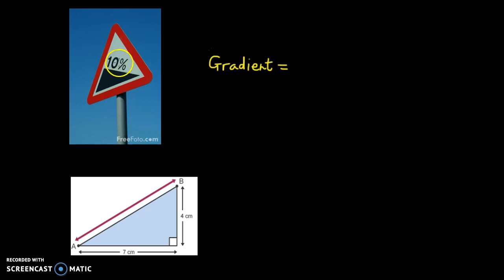It's a slope and there's 10%. Gradient is defined as up over along - how much you go up over how much you go along. You could also define it as rise over run.